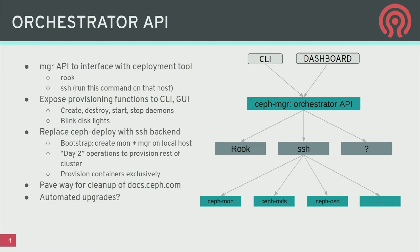The eventual goal is replacing the Ceph Deploy tool that has been neglected in recent years. When you create a new cluster, a bootstrap process creates one monitor and one manager on the local node, and then you use the orchestrator API to add everything else — everything becoming a day-two operation. This will streamline documentation on docs.ceph.com and pave the way for automated upgrades, so the upgrade sequence from one major release to the next can be done automatically by the manager daemon.